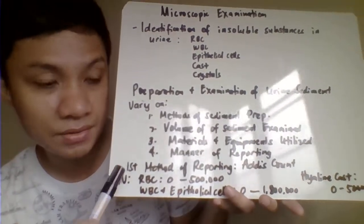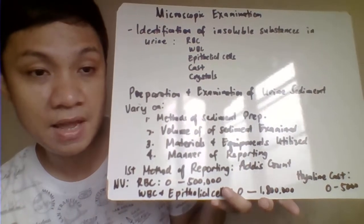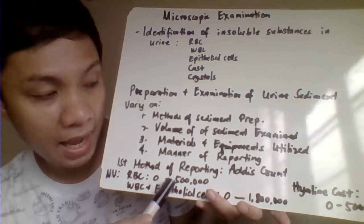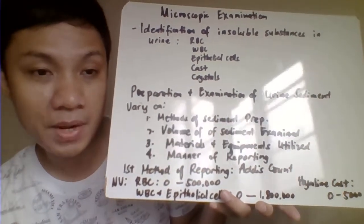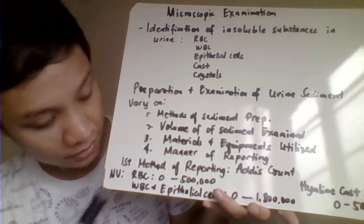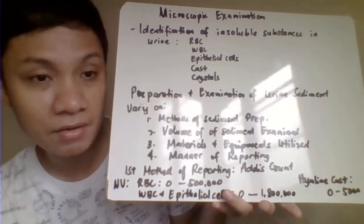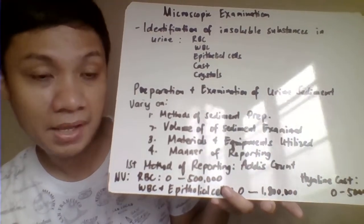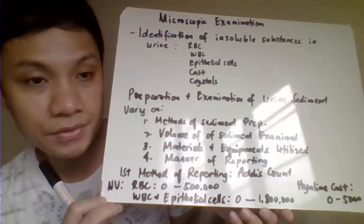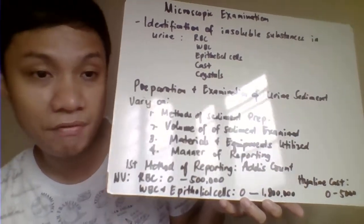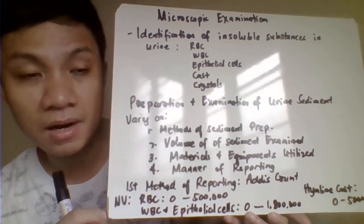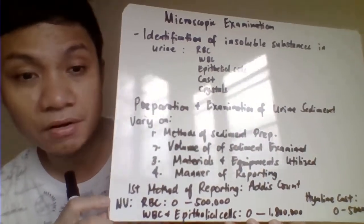The first standardized method of reporting for microscopic sediments is the ADDIS count. The ADDIS count utilizes a urine sample from a 12-hour collection process. The normal values are: RBC count 0 to 500,000; WBC and epithelial cells 0 to 1.8 million. Hyaline casts have a normal value of 0 to 5,000. However, currently these are not the normal values we follow for interpretation of our results.